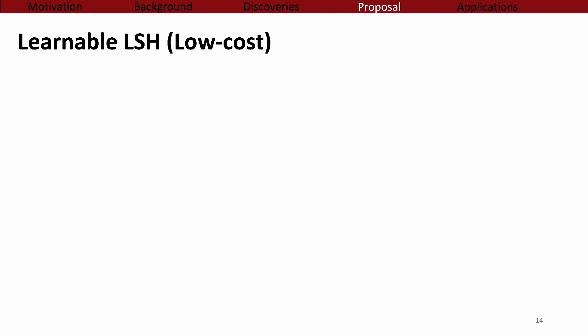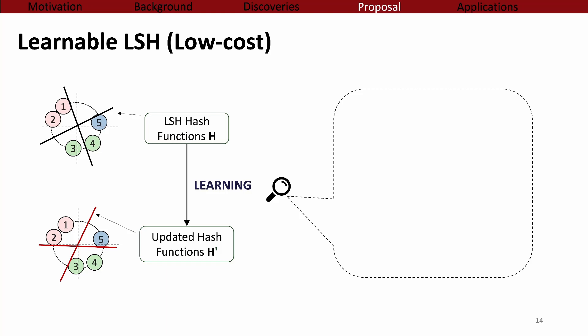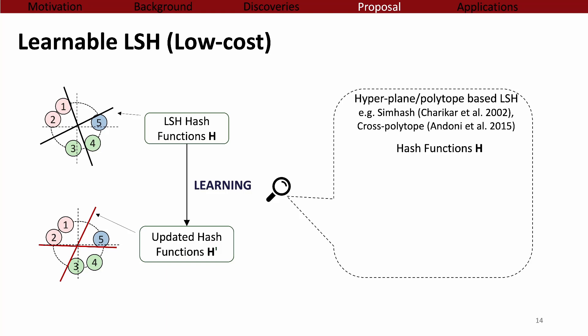Next, we introduce our second component: learnable LSH. The goal of learning the hash functions is to better partition the data and achieve lower query time. We use parameterized hash functions like SimHash or cross-polytope LSH. The learning process involves collecting positive and negative pairs from the previous iteration. Positive pairs come from those that are supposed to be neighbors, like 1 and 2 in our example, and negative pairs come from those that are not neighbors but are partitioned together by hash functions, like 4 and 5. Then we perform supervised learning to update the hash functions.